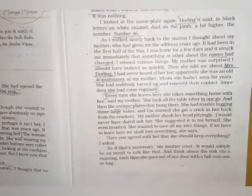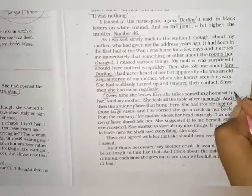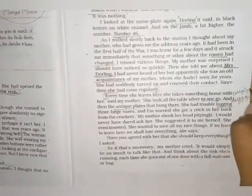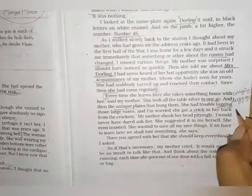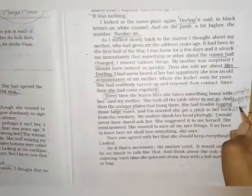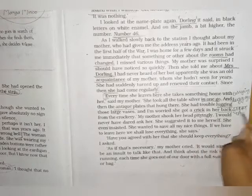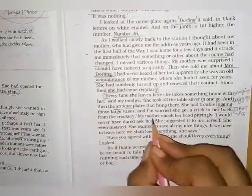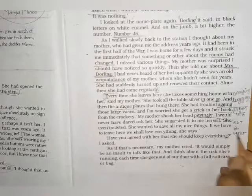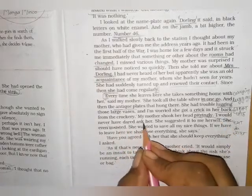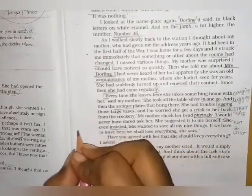'She had trouble lugging' — lugging means carrying heavy things with difficulty — 'she got a crick' — that is a crick — 'in her back from the crockery.' My mother shook her head pityingly. 'I would never have dared ask her. She suggested it to me herself. She even insisted.' Insisted — zor daal kar kehna.